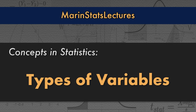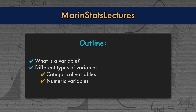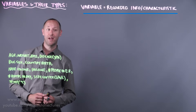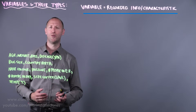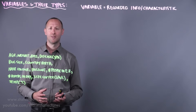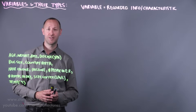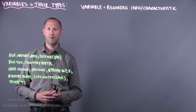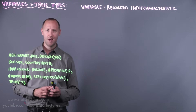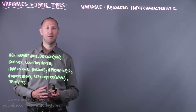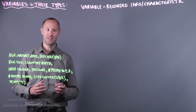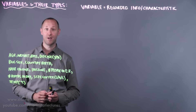Statistics is all about collecting data, recording variables, and using those to make generalizations about a population. A variable is a recorded piece of information or characteristic about a person, case, or unit in our study. Variables are characteristics recorded for each person, but they vary or change from person to person — for example, age. This is the opposite of a constant, which is always the same.